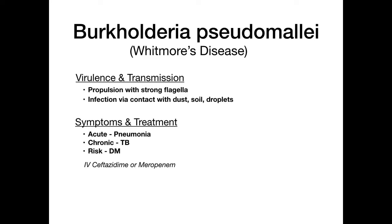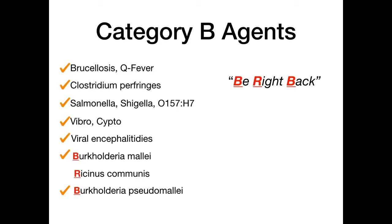To summarize both Burkholderia species: both affect the lungs. Burkholderia mallei (glanders) causes pulmonary abscesses with nasal discharge. Burkholderia pseudomallei (Whitmore's disease) causes acute pneumonia or chronic tuberculosis-like illness, predominantly in immunocompromised patients such as diabetics.